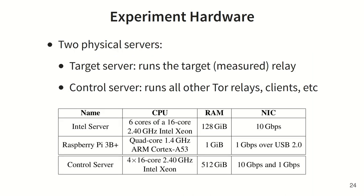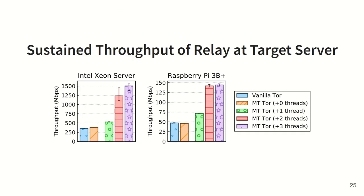We ran experiments with our target relay on two different servers: an Intel-based server and a Raspberry Pi. These servers show the performance of the implementation on very different hardware. We measured the target relay's 30-second maximum sustained throughput for each server, and found significant performance improvements when using multiple threads. Our multi-threaded implementation with only a single thread had similar performance to vanilla Tor, and as we added connection threads to handle the socket communication, we found that the throughput improved significantly.